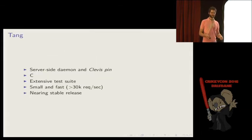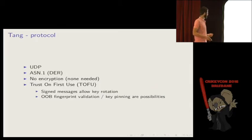So that's the end of the math for now. Tang. Tang is the name of this protocol. We'll get to why it's called that in a little bit. Tang is both a server-side daemon, that's a server component, and a clevis pin. What is clevis? What is a clevis pin? We'll get to that in a few slides as well. It's written in C, it's got an extensive test suite, it's really fast, and quite a small code base, and it's nearing stable release. So I can't tell you exactly when it's going to be in some sort of supported product from my employer, but hopefully one day soon.